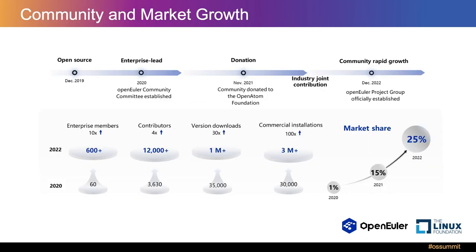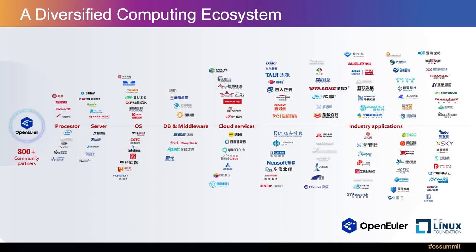The OpenEuler community started from 2019. In 2020, the OpenEuler community committee was established. After three years of development, the community has grown rapidly. The number of OpenEuler contributors has increased by four times, and the number of version downloads has increased by 30 times, with even more growth expected in 2023. Currently we have more than 800 community partners joining us, coming from various industries such as processor, server, OS, DB, and more.